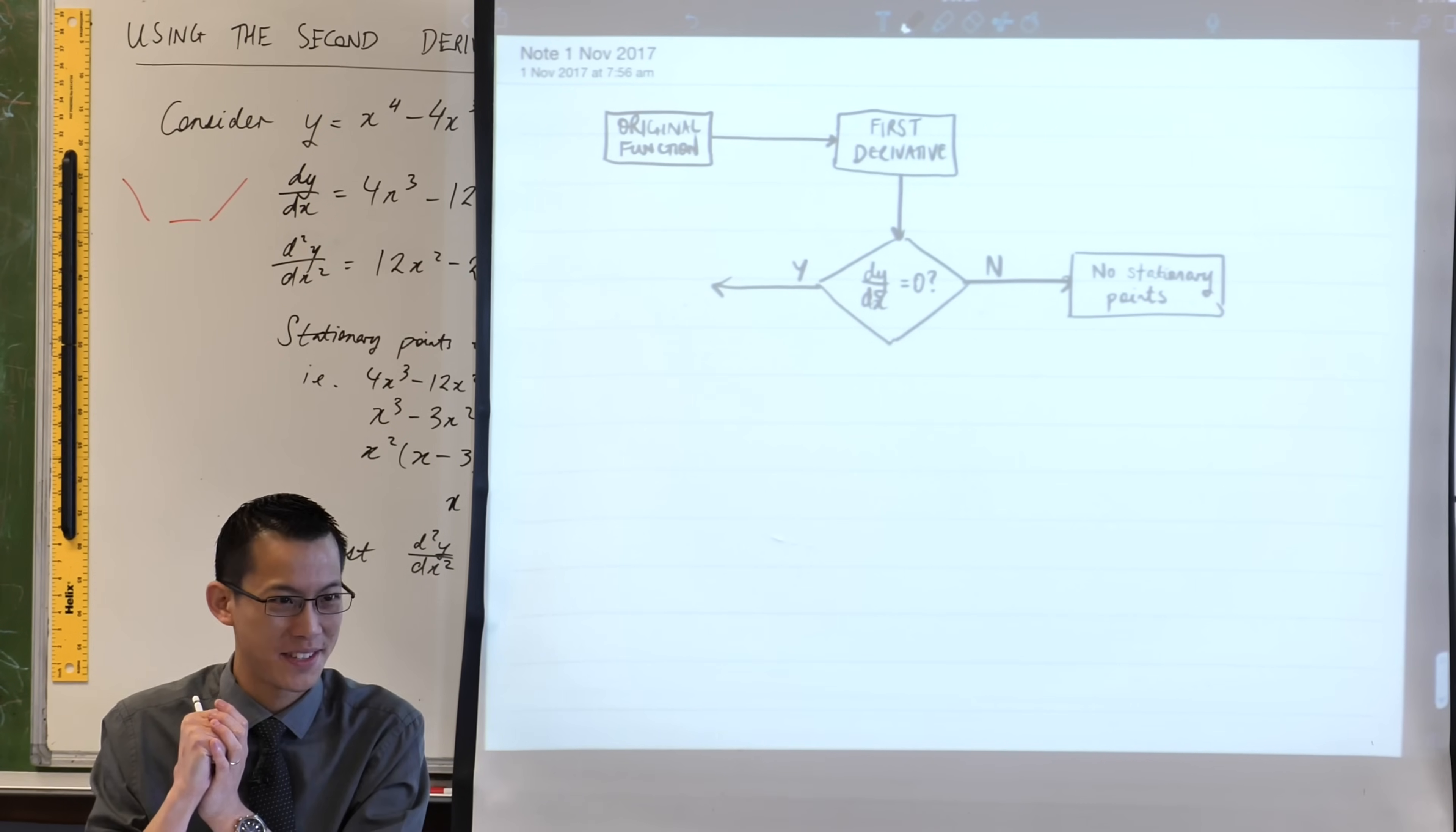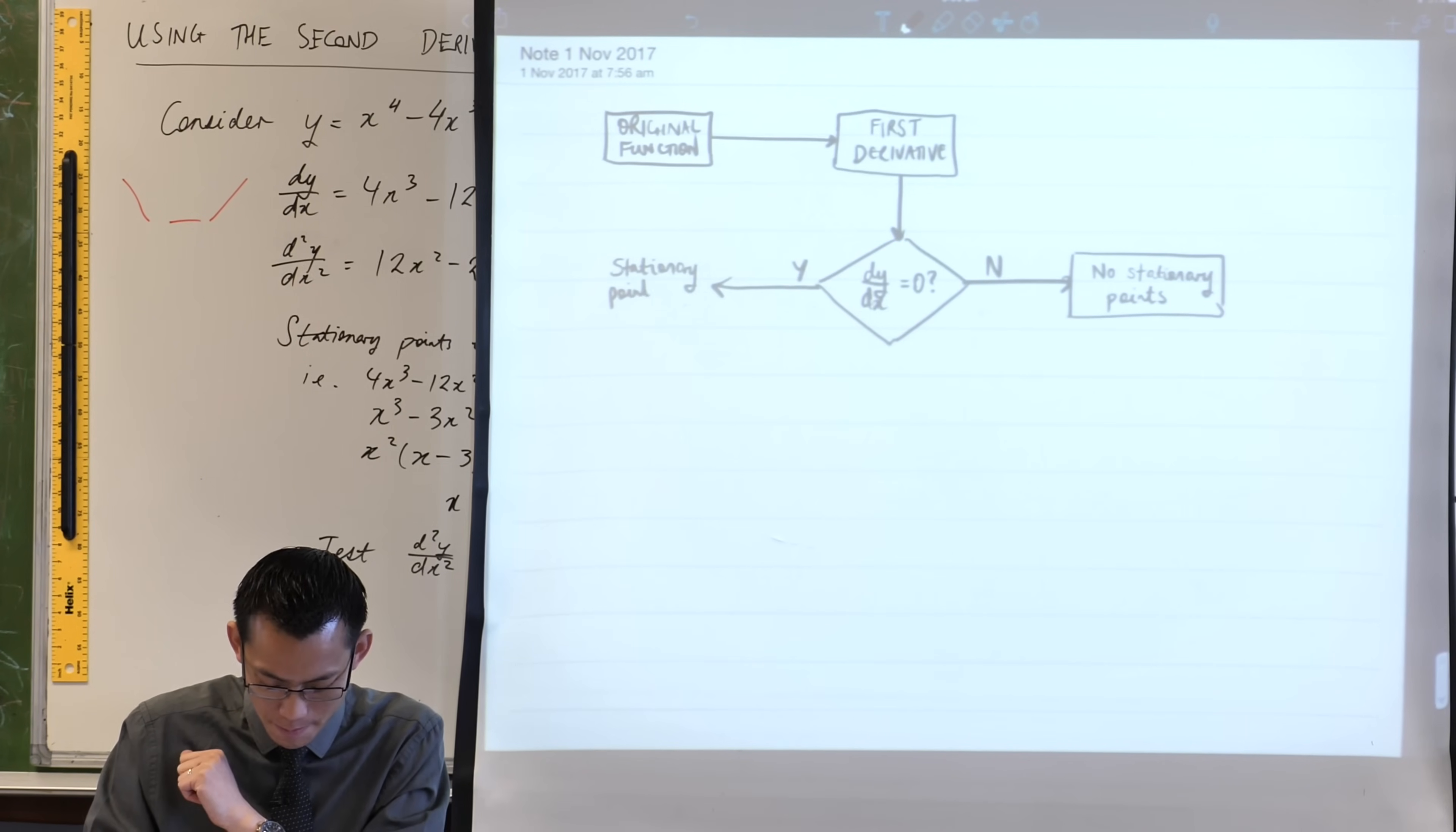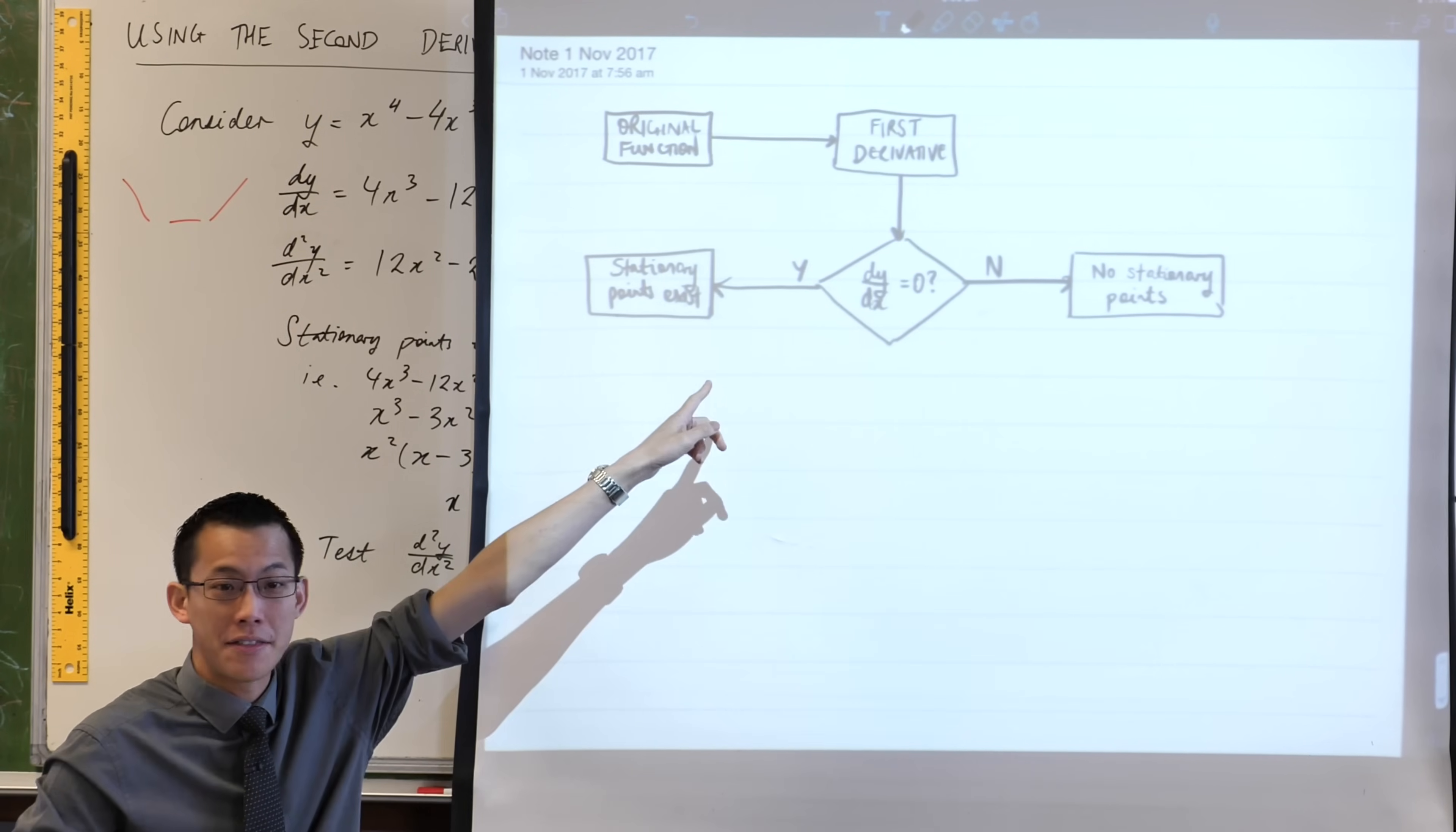But in most cases, yes, you will find a place or places where the first derivative is zero. So you can say at that point, stationary points must exist. If stationary points exist, you found x values right there, but of course you want the whole point.